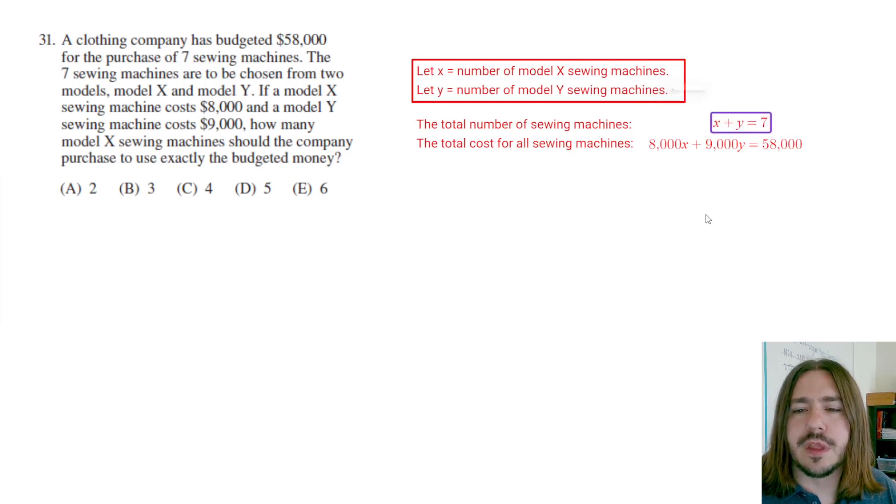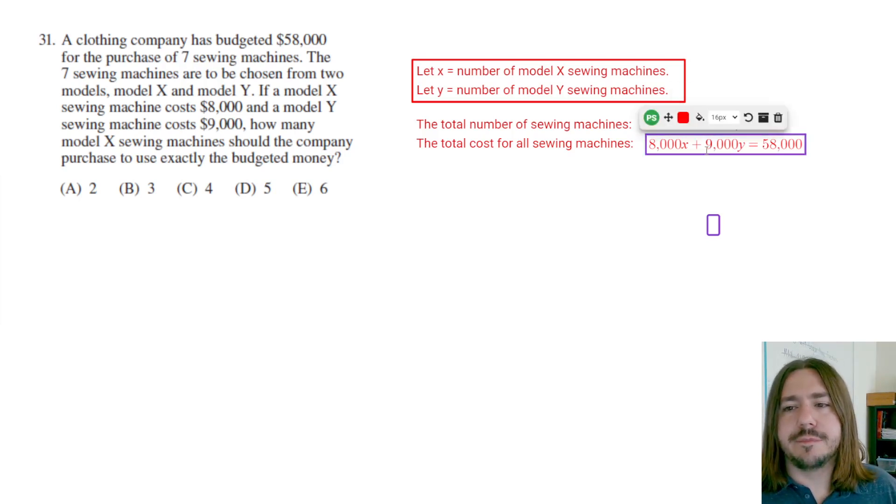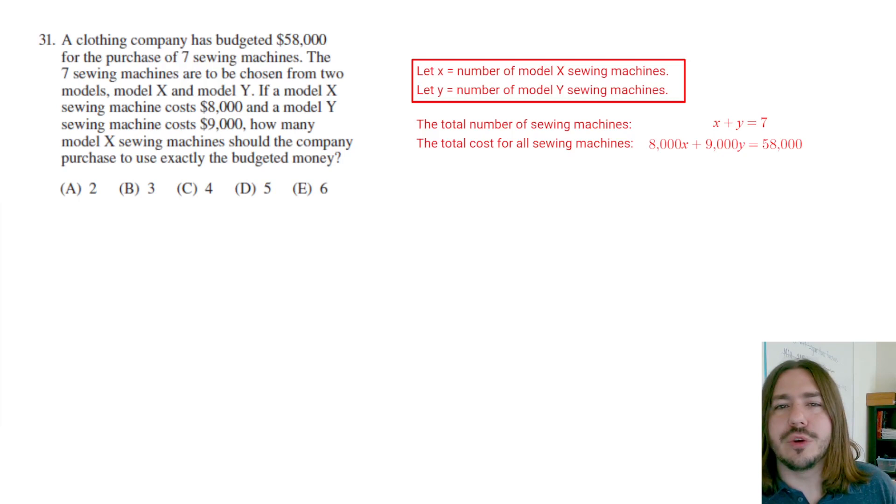So these are going to be our two equations here, and what we need to do is find a solution to this system, meaning we need to find an X and Y value that satisfies both of these equations simultaneously. Now luckily, like I was mentioning before, we don't have to actually find Y. We're only interested in how many Model X sewing machines, although that's kind of the hard part. Once you figure out how many X sewing machines there are, you can find out how many Y sewing machines there are by just subtracting from seven.